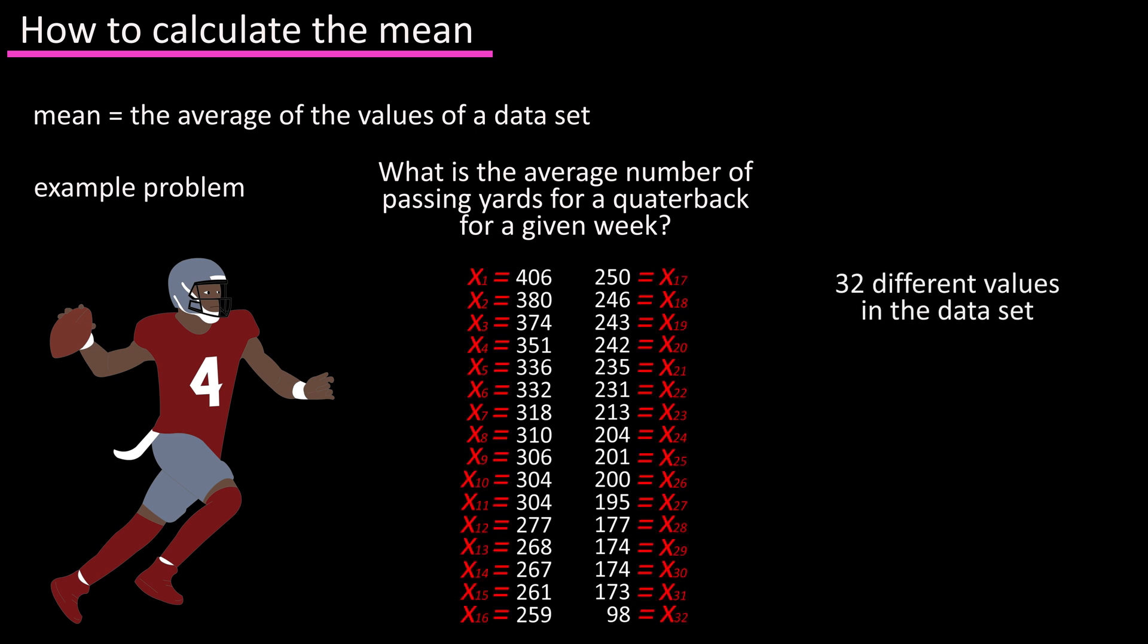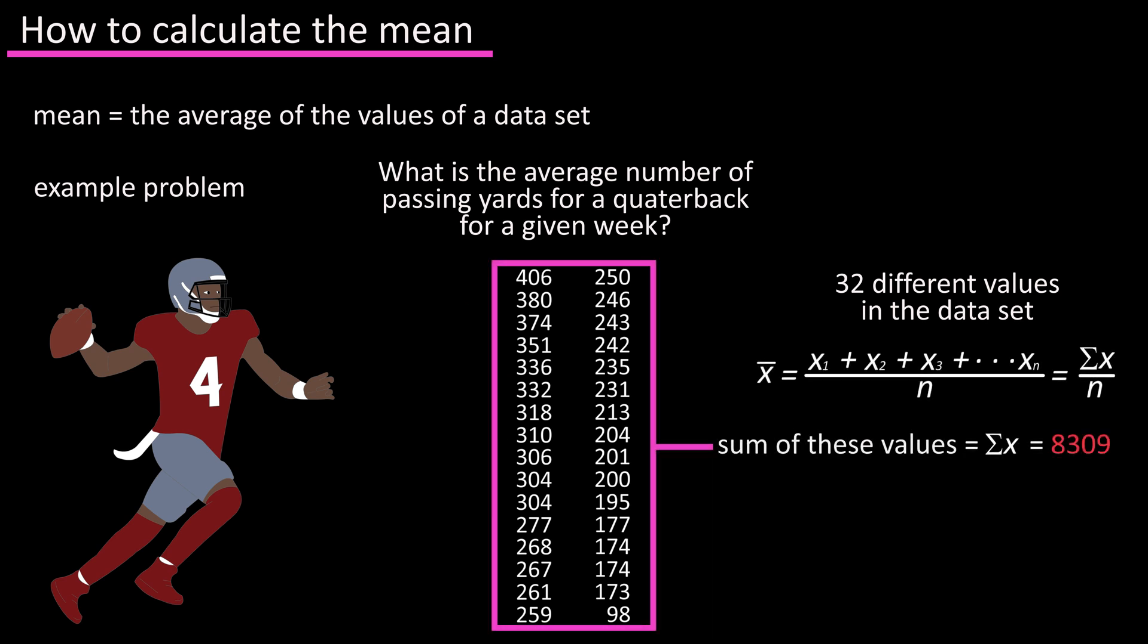Again, x1 through x32. So, x bar equals sigma x over n. Adding together the x values, we have a total of 8,309, and n equals 32. So, x bar equals 259.6563, which we will round off to 259.7.